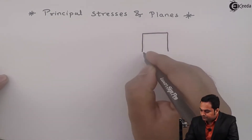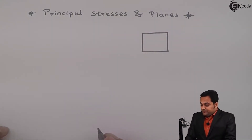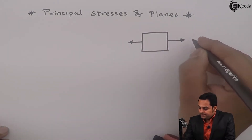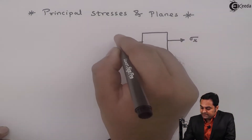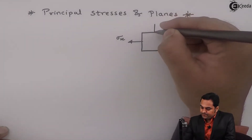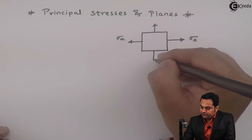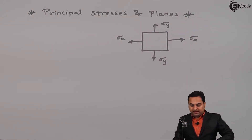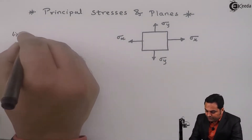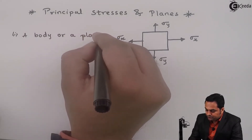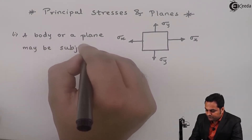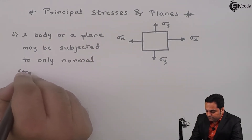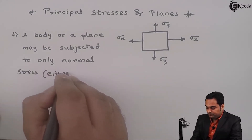Here there is a plane with negligible thickness. I'll assume that along the X direction there is a stress called Sigma X which is of tensile nature, then along Y there is stress Sigma Y which is again of tensile nature. So for this figure, a body or a plane may be subjected to only normal stress.